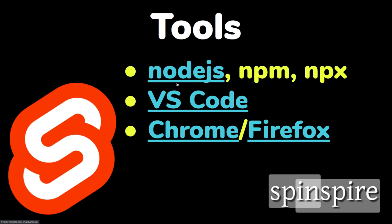Now let's look at the tools you're going to use. You'll definitely need Node.js, npm, and maybe npx. Svelte doesn't require Node.js at runtime on a server, but you do need it installed on your development machine to compile Svelte. When you download and install Node.js, it comes with npm. npx is like npm but it downloads and executes programs rather than just downloading them.